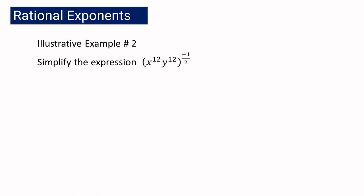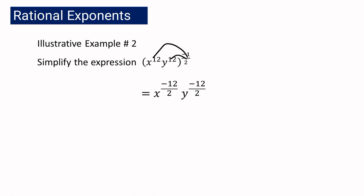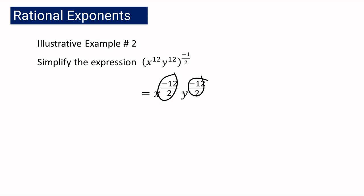Let us proceed with example number 2. We have here quantity x raised to 12, y raised to 12, raised to negative 1 half. To simplify the expression, following the law of exponent, you are going to distribute our exponent. Therefore, we will be having x raised to negative 12 over 2 — that is 12 multiplied by negative 1 half — and then y raised to negative 12 over 2. We simplify negative 12 over 2, giving us x raised to negative 6 and y raised to negative 6.